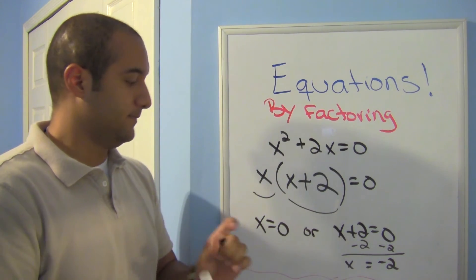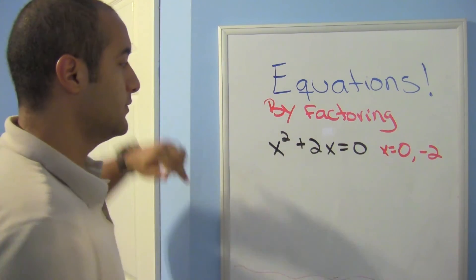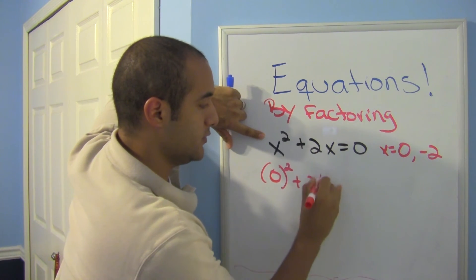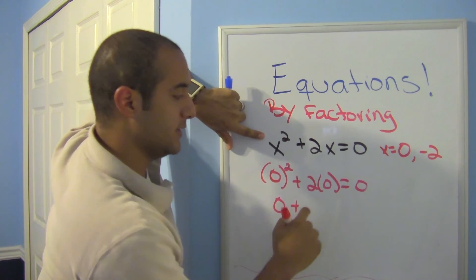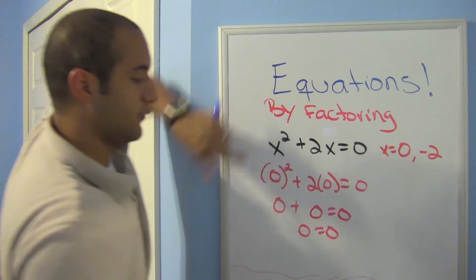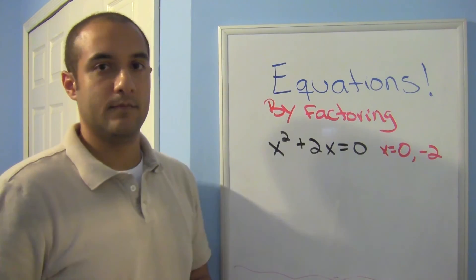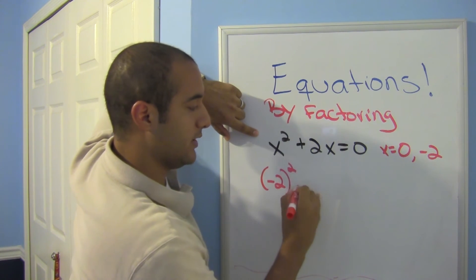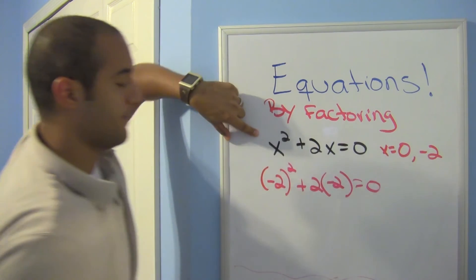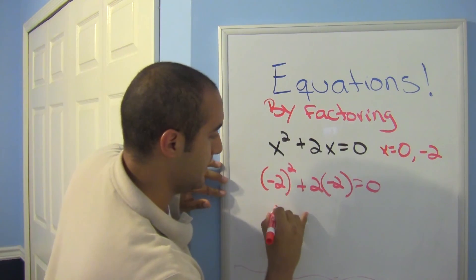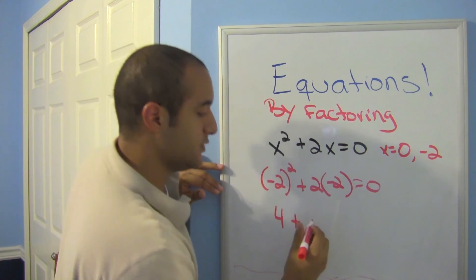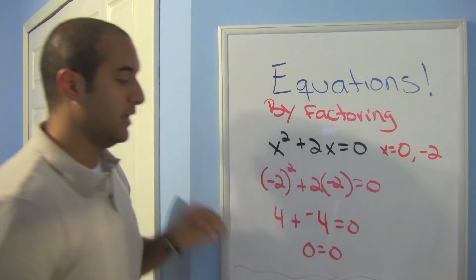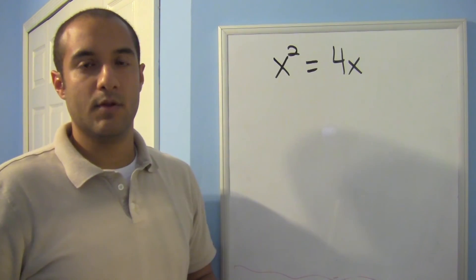Let me show you why we split into two. In the first scenario, x equals 0: substituting gives 0 squared plus 2 times 0 equals 0, which is 0 plus 0 equals 0 — true. For x equals negative 2: negative 2 squared plus 2 times negative 2 equals 0, which is 4 plus negative 4 equals 0 — also true. So both are valid answers.